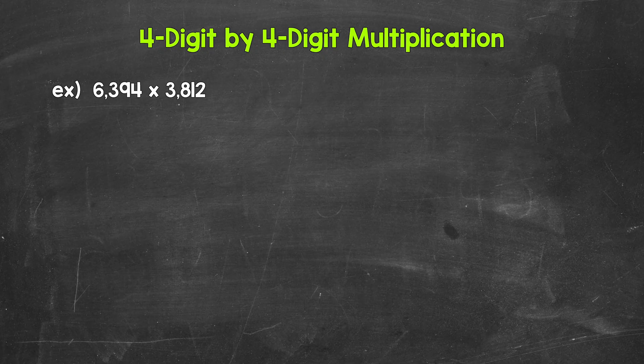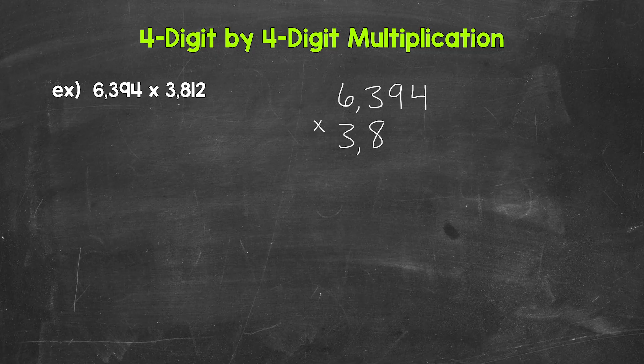Let's jump into our example where we have 6,394 times 3,812. The first thing that we need to do is set this problem up, and we do that by lining up the places. So we have the ones place, the tens place, the hundreds place, and the thousands place lined up.